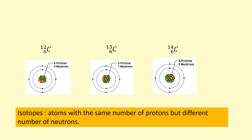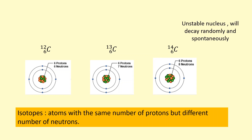Carbon-14, because it has those two extra neutrons, is unstable — the nucleus can decay randomly and spontaneously. By randomly and spontaneously, I mean we can't predict when it's going to decay, and we also can't influence the decay by increasing the temperature or pressure like in a chemical reaction. It's just completely random and can't be influenced.